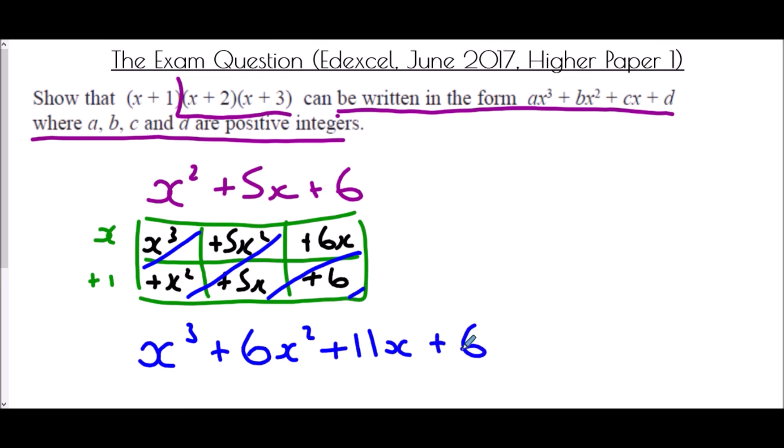Does it do what it suggests? It should be in the form ax cubed plus bx squared plus cx plus d, with all positive integers. In this case, a equals 1, b equals 6, c equals 11, and d equals 6. So we have done exactly what was asked.